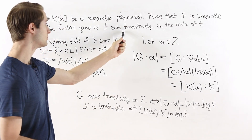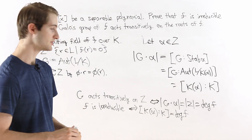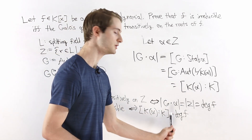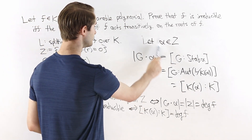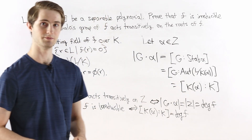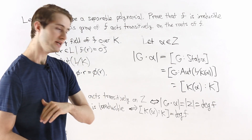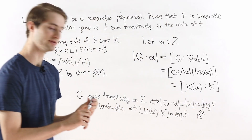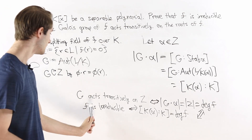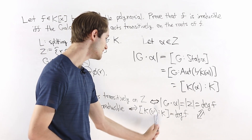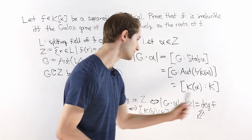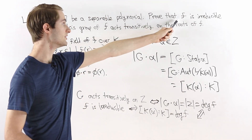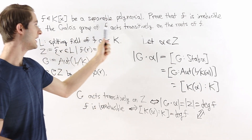Now let's put everything together. Both equivalences ask whether some number equals deg(f): transitivity asks whether orbit size equals deg(f), and irreducibility asks whether [k(α):k] equals deg(f). But we proved that orbit size equals [k(α):k]. So one equals deg(f) if and only if the other does. Therefore: f is irreducible ↔ [k(α):k] = deg(f) ↔ orbit size = deg(f) ↔ G acts transitively on Z. This completes the proof.